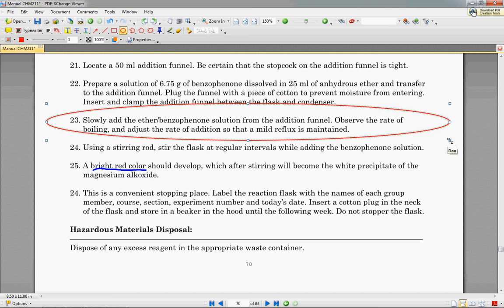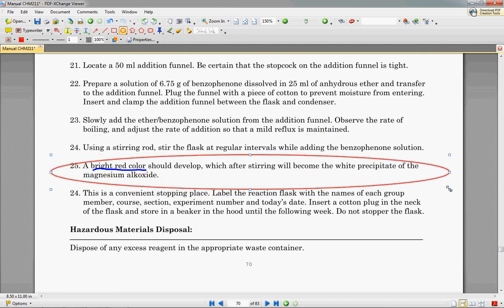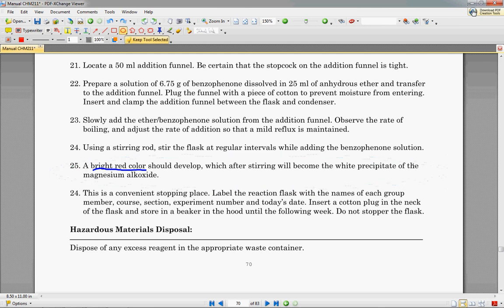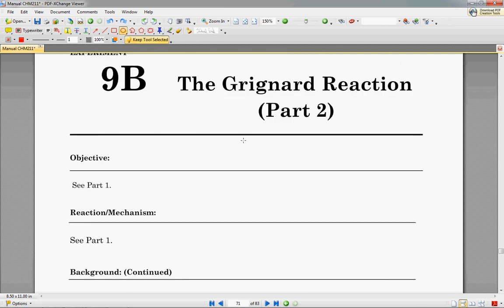And you will slowly add the ether-benzophenone solution from the addition funnel, observe the rate of boiling and adjust the rate so that only a mild boil is maintained. We're then going to use a stirring rod to just mix the solution. And what you should have developed is a bright red color, which after stirring will become the white precipitate of the magnesium alkoxide. And as it falls out of solution, it'll be a nice little white, pretty much a crystal.